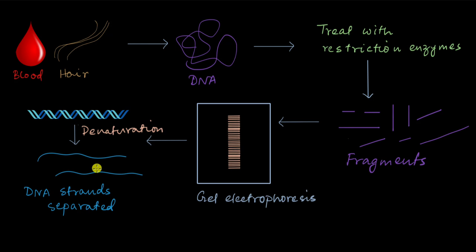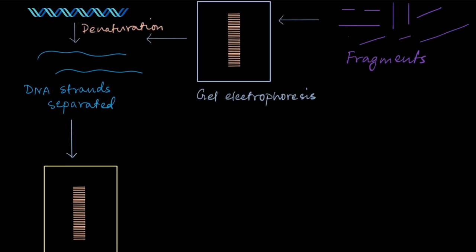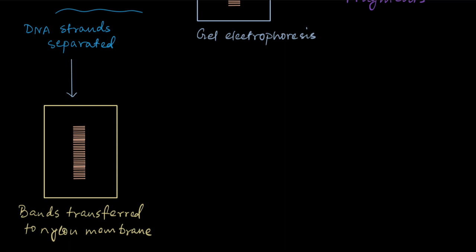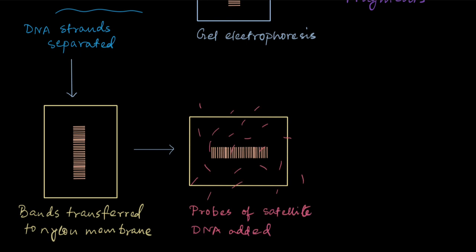Once that happens, then we transfer the DNA, the bands that we obtain in the gel electrophoresis, to a nylon membrane or a nylon sheet. And then we take the sheet and then we add a solution containing probes of satellite DNA. Now, what are these probes? These probes are short DNA molecules, which are single-stranded and they have sequences of the satellite DNAs, which we are interested in.